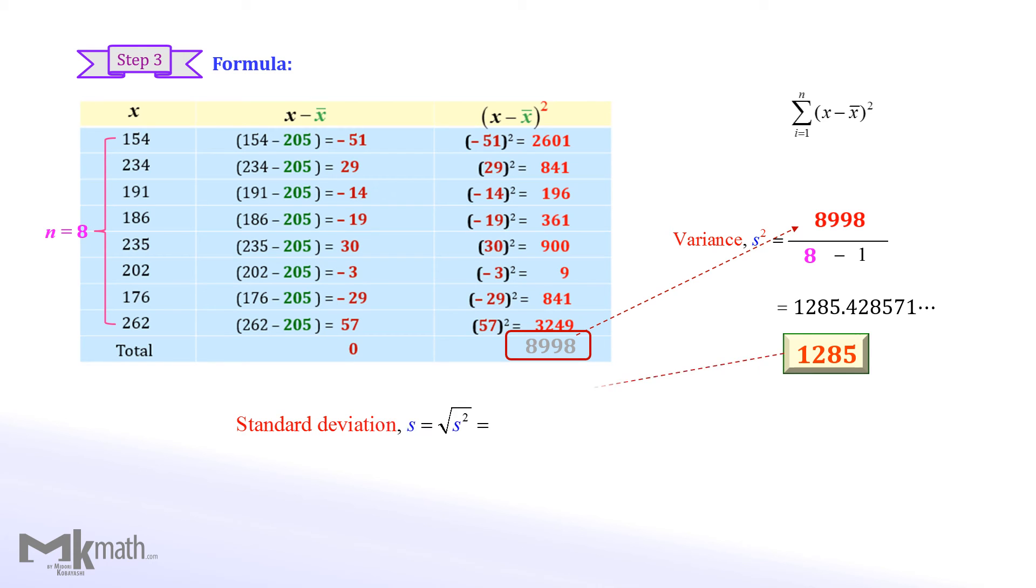Then we get the standard deviation by taking the square root of the variance. Therefore, the standard deviation is the square root of the variance of 1285 to get 35.8 mg per deciliter. Please note that the unit of the standard deviation is the same as that of the mean.